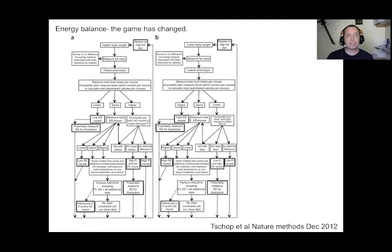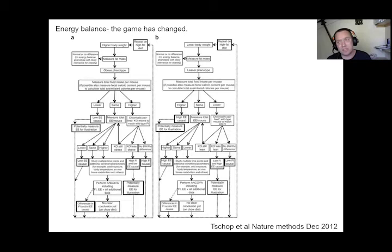This talk is about energy balance and metabolic rate. I've given this talk for quite a while. The idea was to suggest it was relevant because you couldn't get away with analyzing the energy expenditure of your mice the way people had done for a very long time. In 2012, Chop et al. in Nature Methods said this is how we should analyze energy balance and calculate metabolic rate.